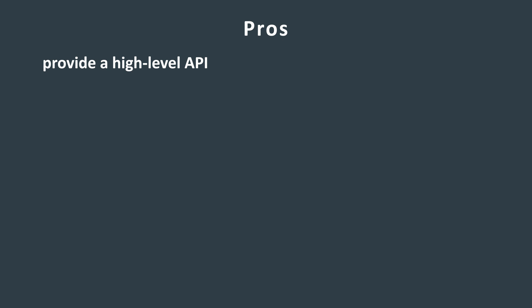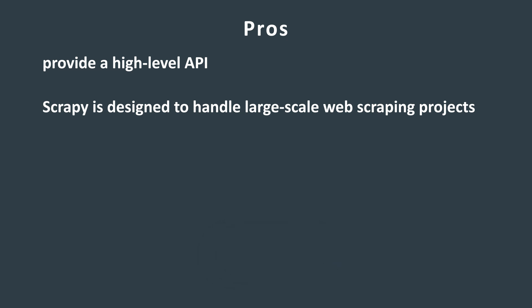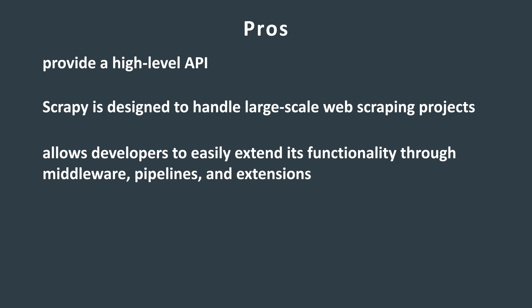Scrapy provides a high-level API that makes it relatively simple to set up and run web scraping projects. It handles common tasks like request handling, response parsing, and cookie management. Scrapy is designed to handle large-scale web scraping projects — it supports asynchronous networking and can run multiple spiders simultaneously, allowing for efficient and fast crawling of websites.